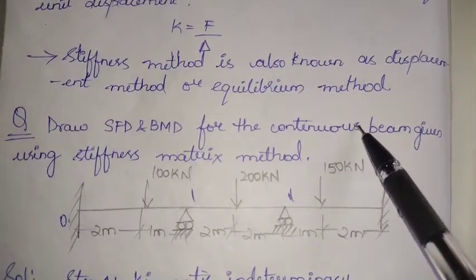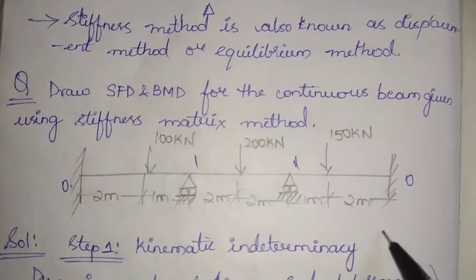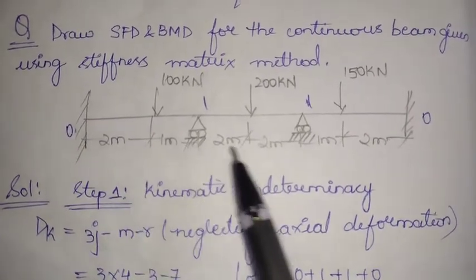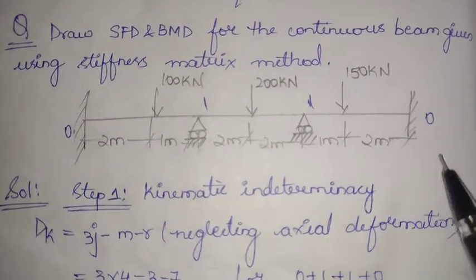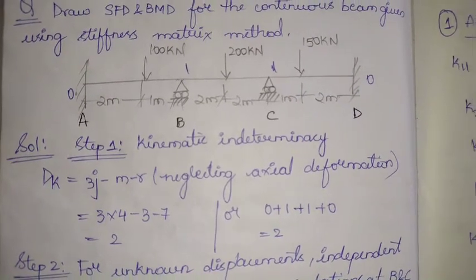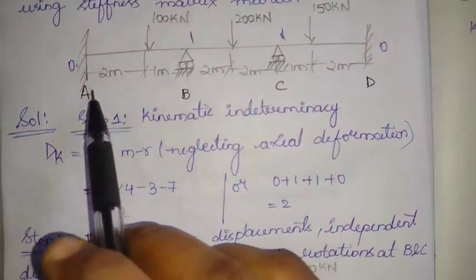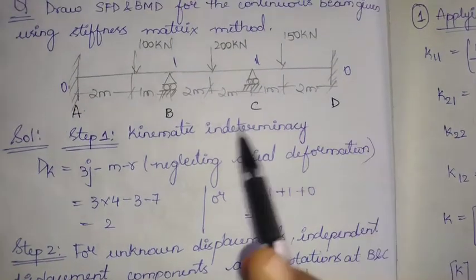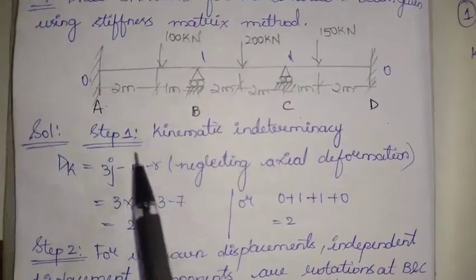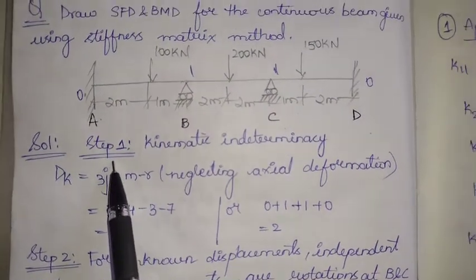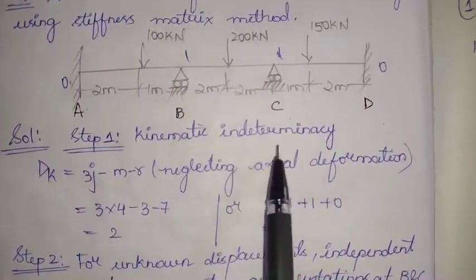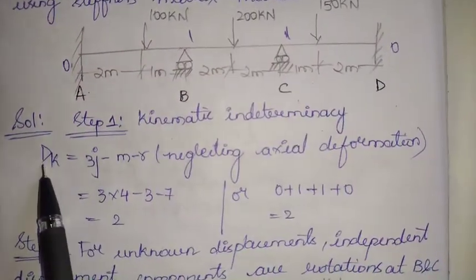We will now understand this method with an example. This is a three-span continuous beam having fixed ends at both A and D, and it is on roller supports at B and C. Step one in the stiffness matrix method is determining the kinematic indeterminacy.